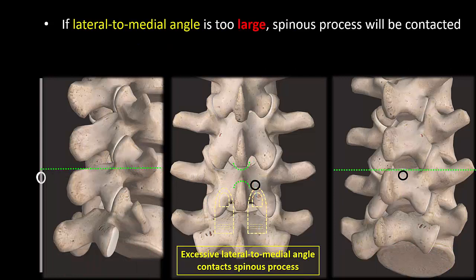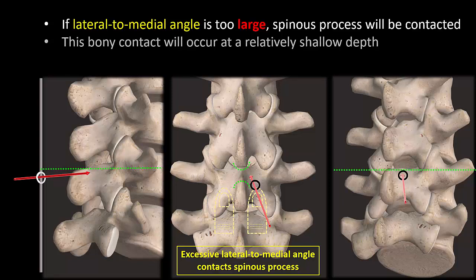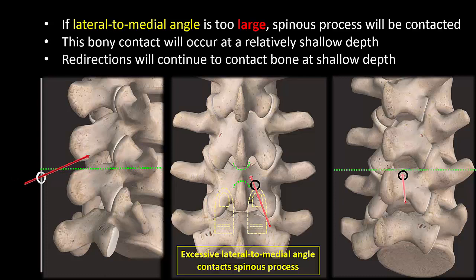If the lateral to medial angle is too large, the lateral aspect of the spinous process will be encountered. This is signaled by bony contact at a relatively shallow depth with initial and subsequent needle passes. It is helpful during local anesthetic infiltration to deliberately angle the needle medially and determine where the spinous process lies, which sets the limit for lateral to medial angulation that should not be exceeded.